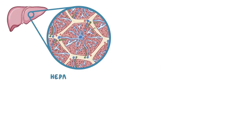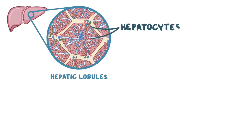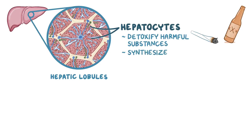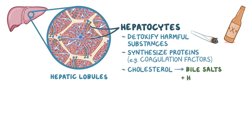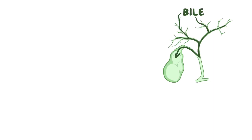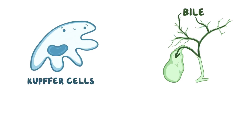The liver is made up of functional units called hepatic lobules. The main cells are called hepatocytes, and their main job is to use a huge array of enzymes to detoxify harmful substances from our blood, like drugs or alcohol, synthesize a variety of important proteins like coagulation factors, and convert cholesterol into bile salts, which along with water and bilirubin make up the bile. Bile flows into the bile ducts and eventually reaches the gallbladder, a small pear-shaped hollow organ beneath the liver, where bile is stored and becomes more concentrated. Another type of liver cell is the Kupfer cell, which are modified macrophages scattered throughout the lobules that destroy old red and white blood cells, bacteria, and other foreign substances.